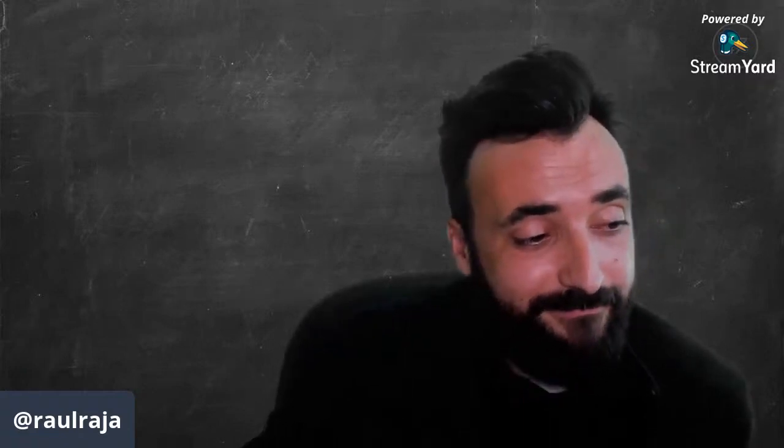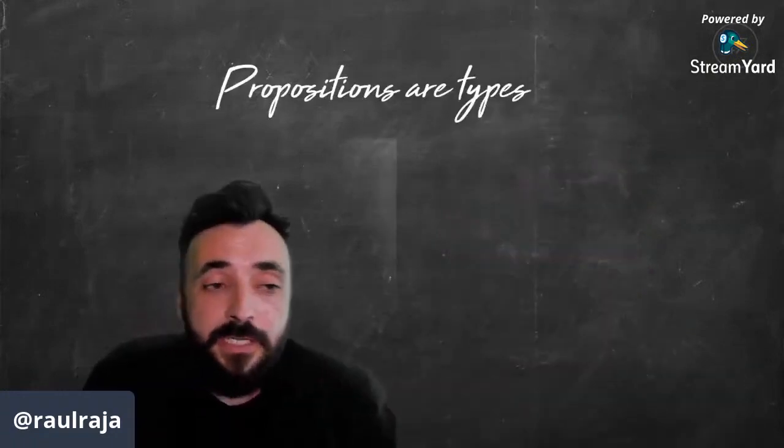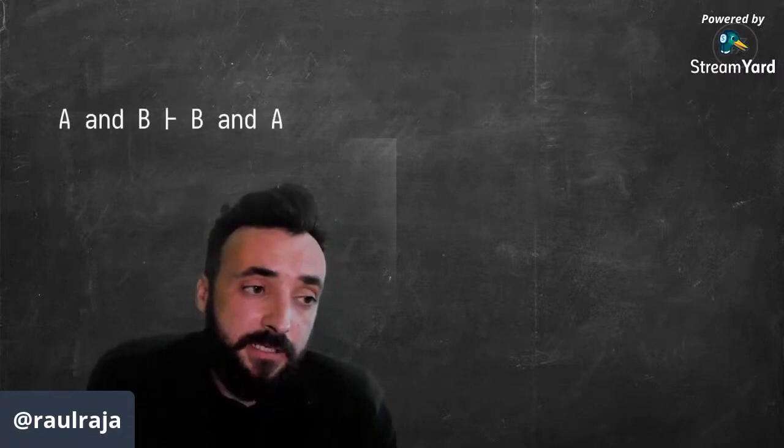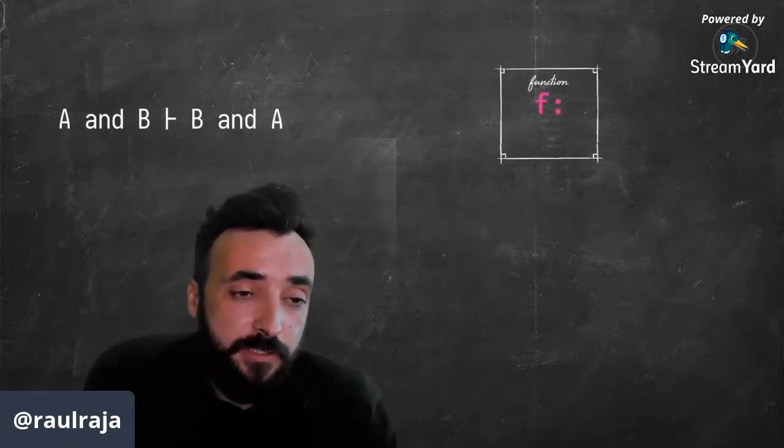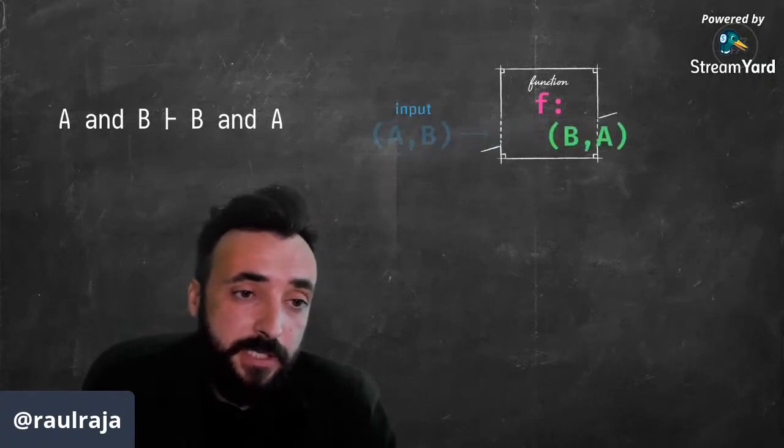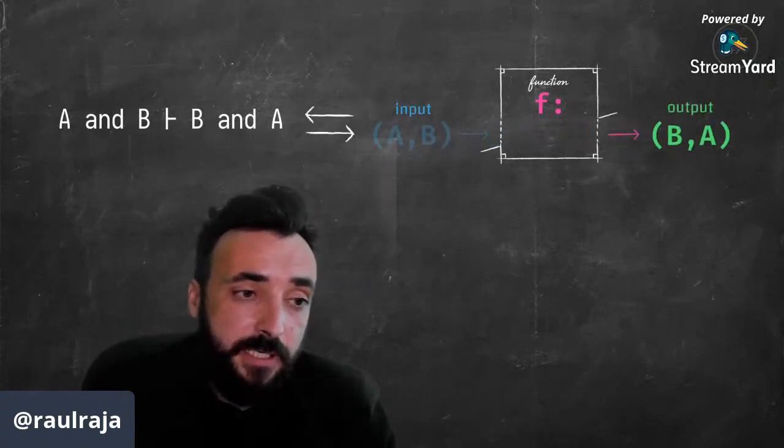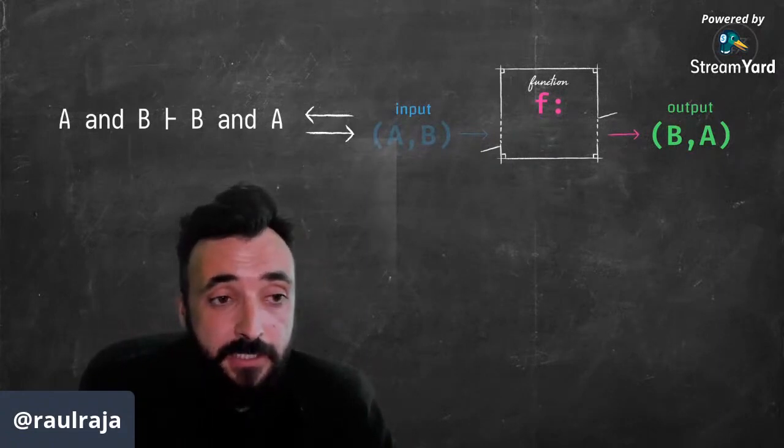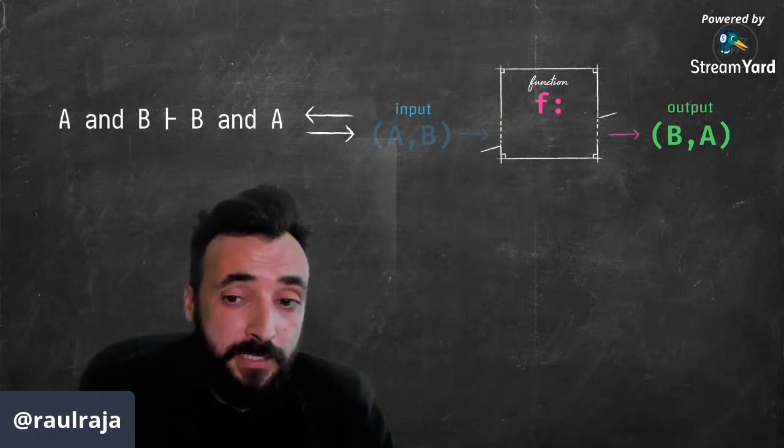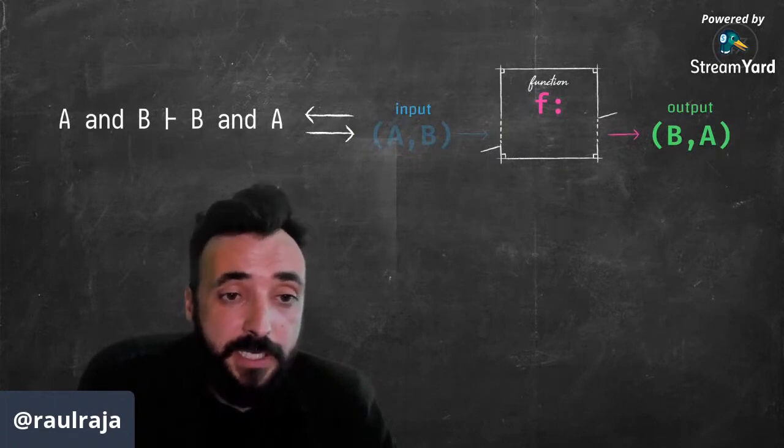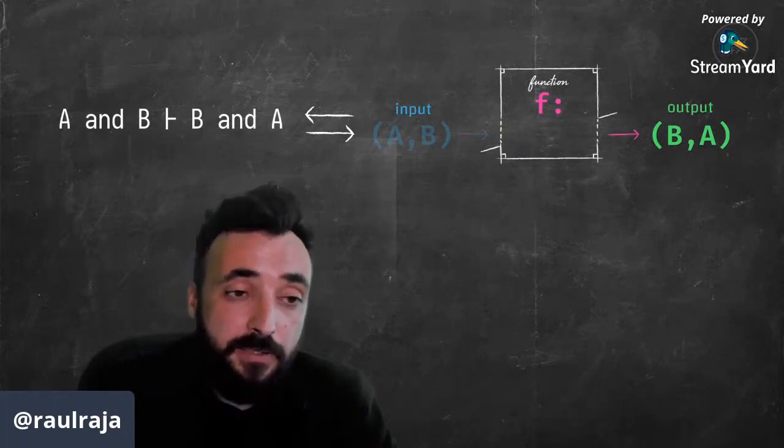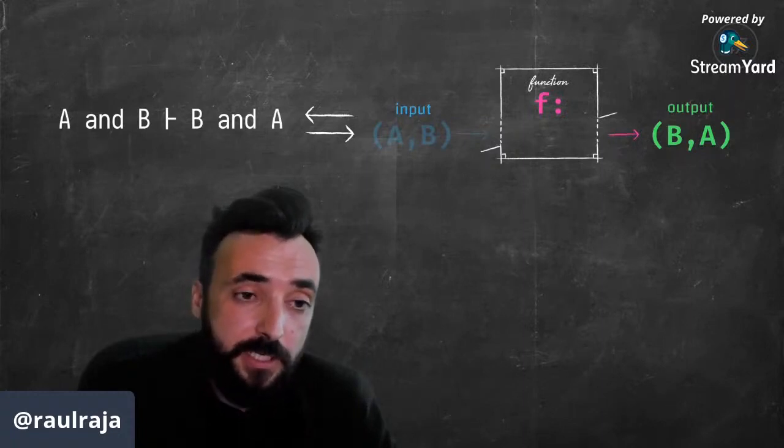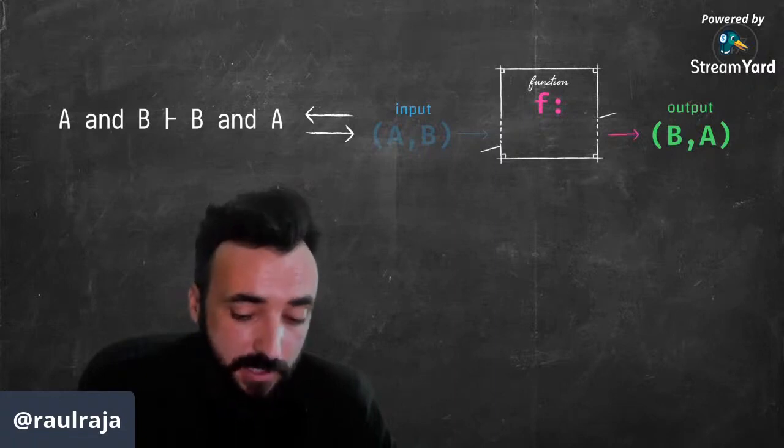So let's get started. The first thing we're going to learn about is that propositions can be seen as types. There's a direct relationship between combinatory logic and set theory or the theory of types. We can see this relationship where in logic, if we have both A and B, that implies we have B and A. This could be easily encoded in any language that has tuples or functions with two arguments by proving this type of relationship. This tells us something important: there is a direct relationship between logic and implication, and what we encode in computer programs.